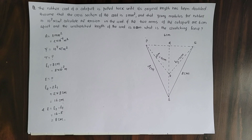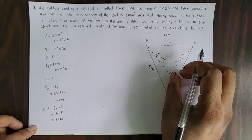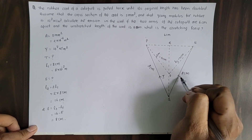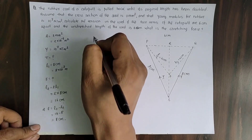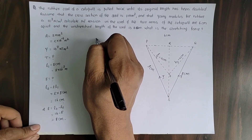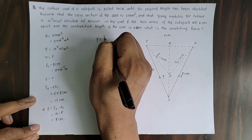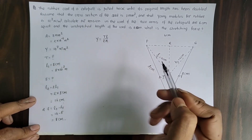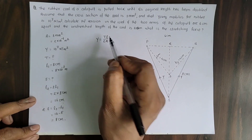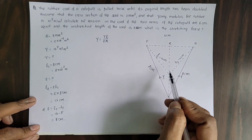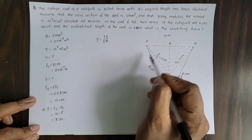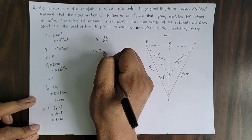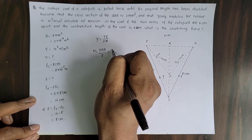When the rubber cord is stressed to point S from point O, let T be the tension applied on the rubber cord. From the formula of elasticity, Young's modulus Y equals T×L divided by E×A. Here T is the tension applied on the cord, L is the original length, E is the elongation produced in the cord, and A is the cross-section area. Rearranging, tension T equals Y×E×A divided by L.